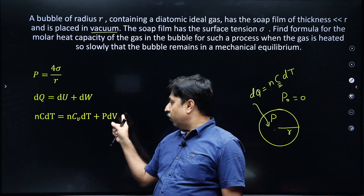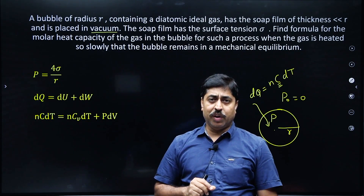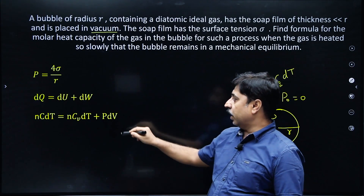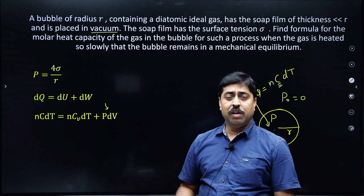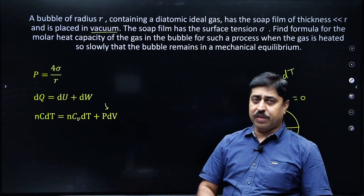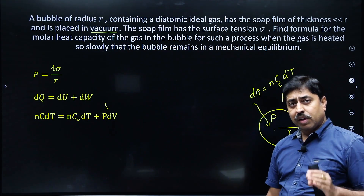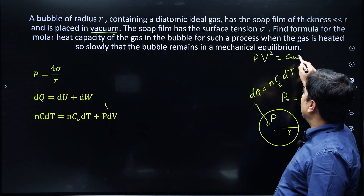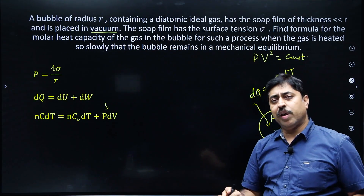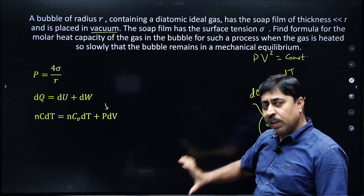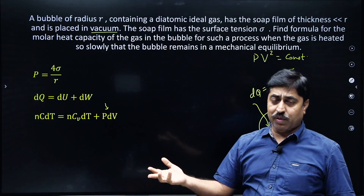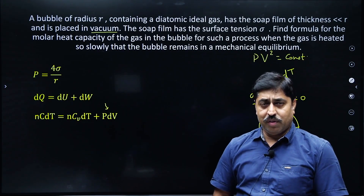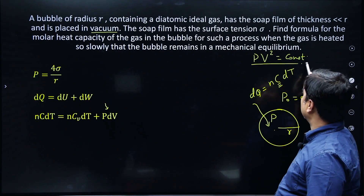We try to express PDV in terms of the change in temperature DT. If DT cancels out, you get the value of C for the specific process. In most thermodynamics questions, a relationship between thermodynamic variables is given — for example, PV² = constant. Using such an equation along with the ideal gas equation, we can manipulate and express the work term in terms of DT. But here, no such relationship is explicitly given in the question.